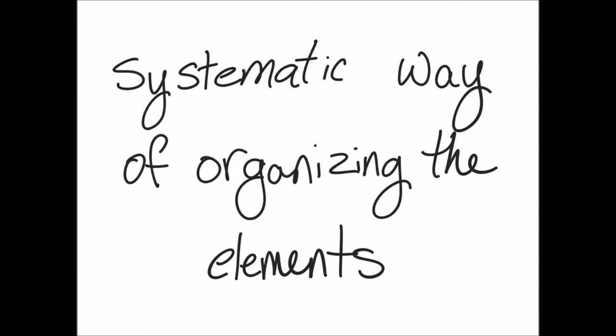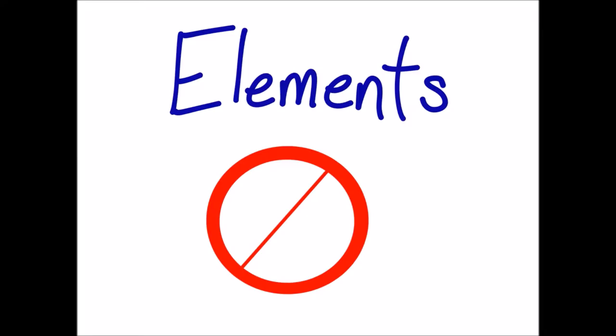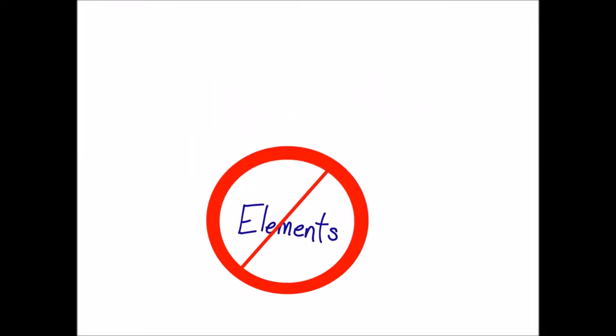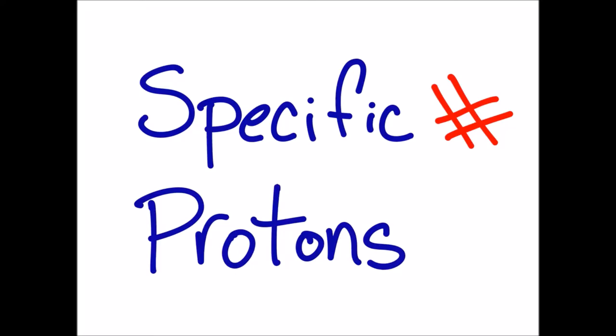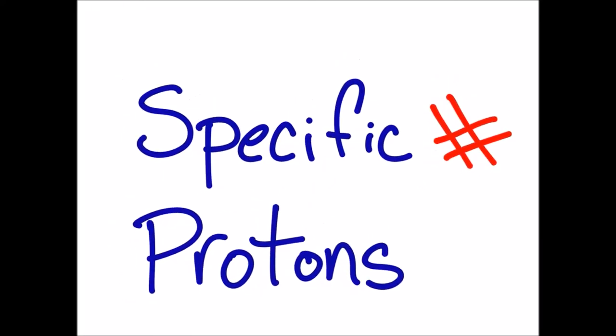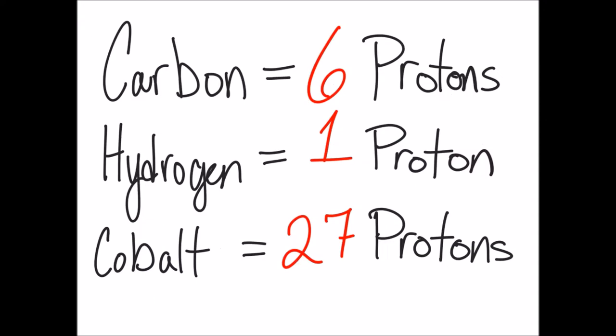What is the Periodic Table? The Periodic Table is a systematic way of organizing the elements. Elements are particles of matter which cannot be further broken down. Elements are atoms with a specific number of protons. All carbon atoms have 6 protons, all hydrogen have 1 proton, and all cobalt atoms have 27 protons.